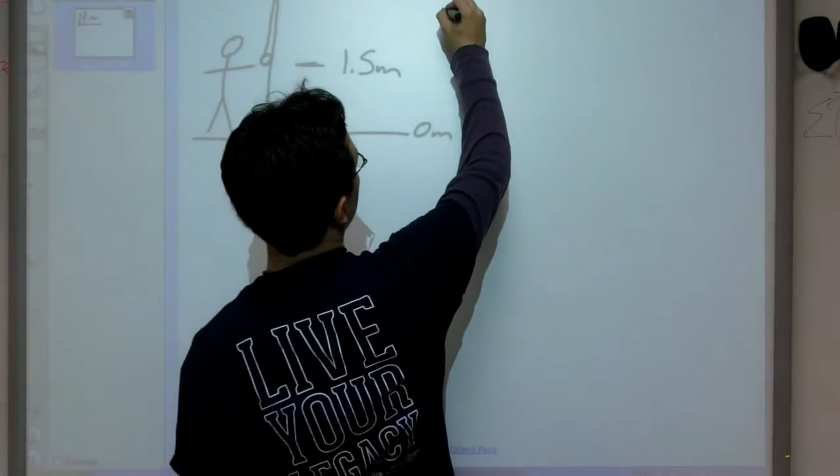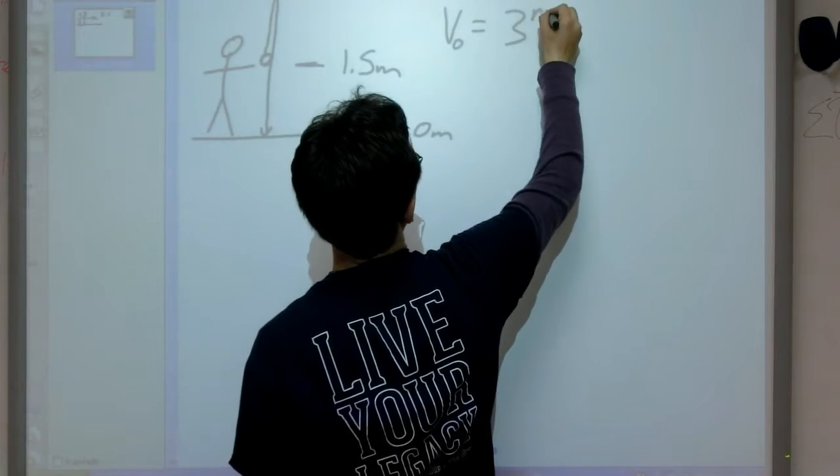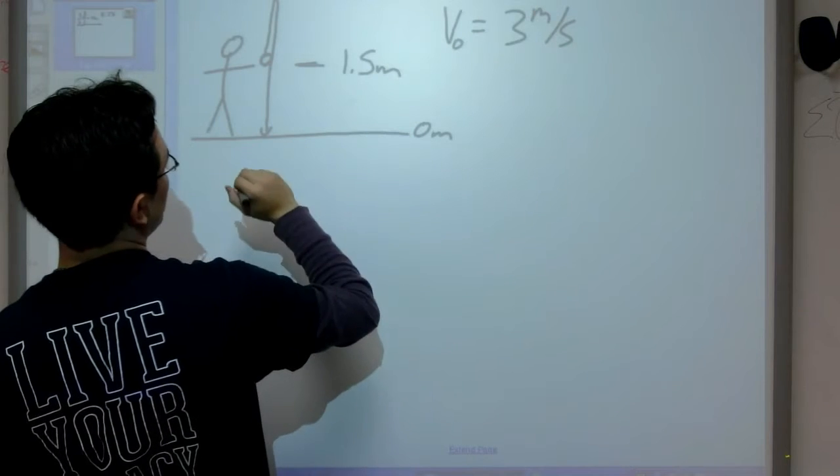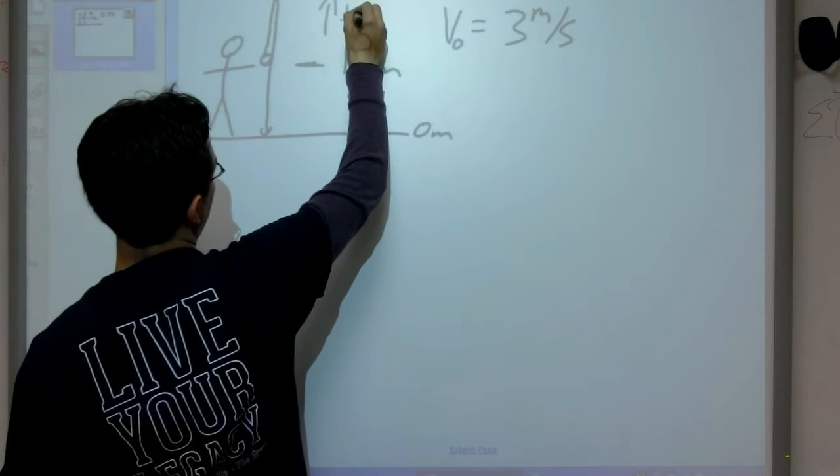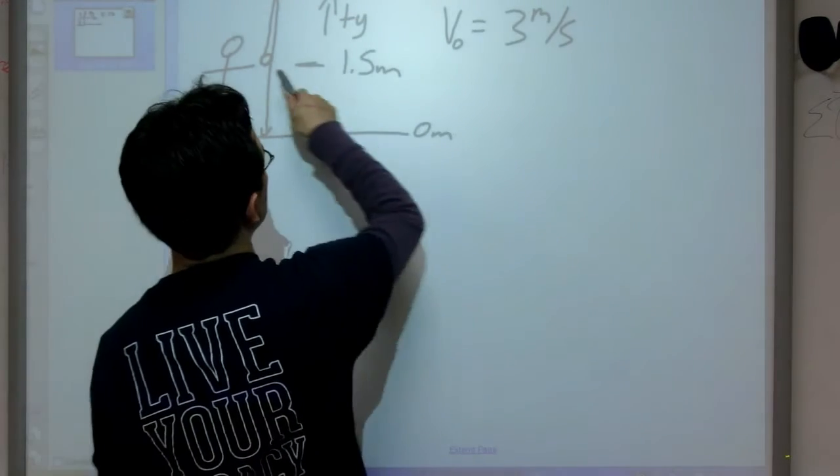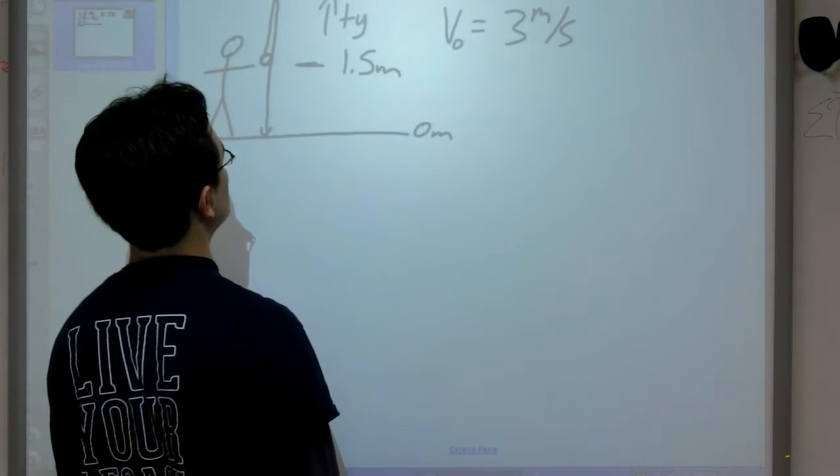I'll also tell you that when it left my hand, its initial velocity was 3 meters per second. Now because of the way that I've drawn this out and the way that we're used to, we're going to declare our coordinate system where up is the positive y direction. And our initial velocity is going up, so it's a positive, not a negative.